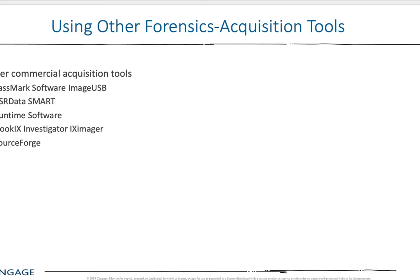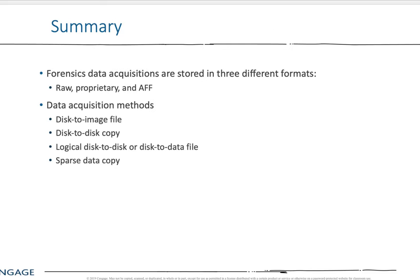Other acquisition tools — there's a whole list. SourceForge is also pretty commonly used. In summary, forensics data acquisitions are stored in three different formats: RAW, proprietary, and AFF. RAW and AFF are more portable, since proprietary depends on the tool you have. Some tools will take in proprietary formats and convert them.